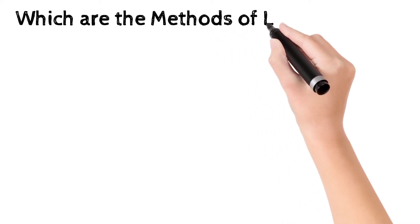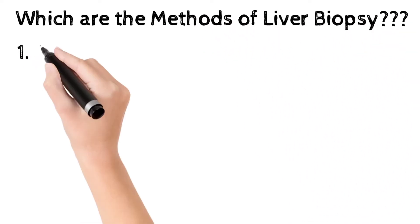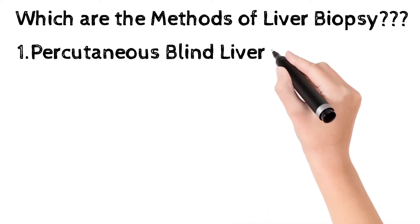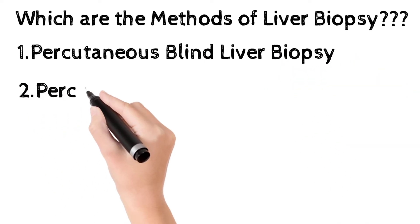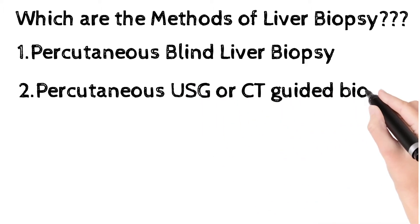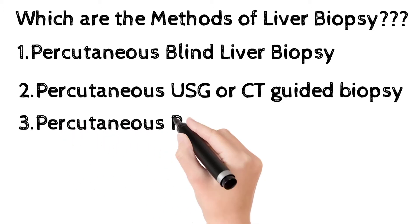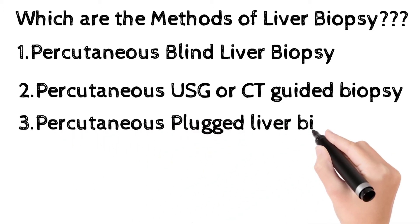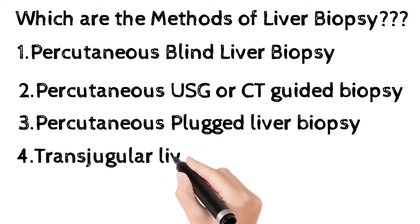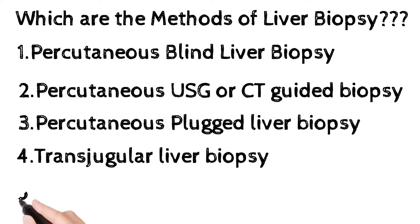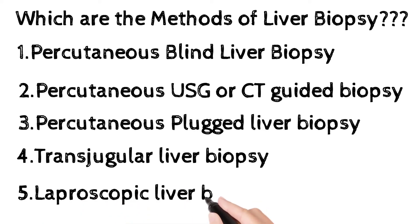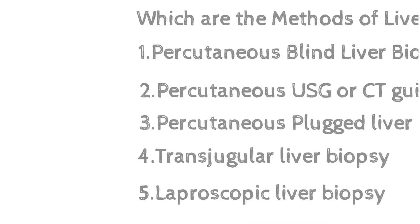There are five methods of taking a liver biopsy. The first is percutaneous blind liver biopsy. The second is percutaneous ultrasonography or CT scan guided liver biopsy, which is better than blind biopsy. The third is percutaneous plugged liver biopsy — percutaneous means inserting the needle through the skin. The fourth is transjugular liver biopsy through a transvenous route. The fifth is laparoscopic liver biopsy, performed during laparoscopy.